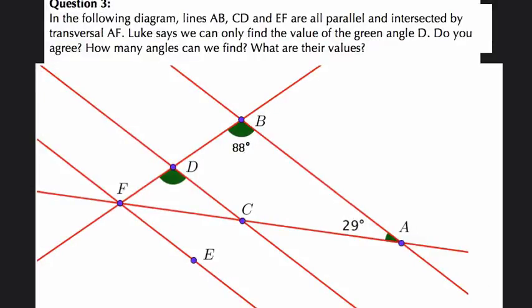Okay, so in this following diagram, we have parallel lines AB, CD, and EF. I'm going to highlight those really quickly. We have AB right here, CD, and EF cut by transversal AF right here.